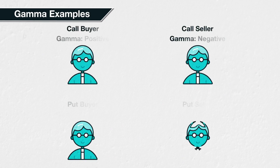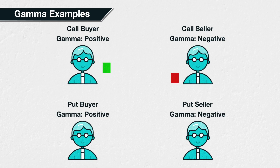So the buyers of both call and put options are long gamma, meaning their position's delta will increase as the underlying price increases, and their delta will decrease as the underlying price decreases. For option sellers, the opposite is true — their position's delta will decrease as the underlying price increases, and their delta will increase as the underlying price decreases. This means that sellers are effectively getting shorter as the underlying price increases, and getting longer as the underlying price decreases. This can lead to something called a gamma squeeze, which we will cover later in the course.